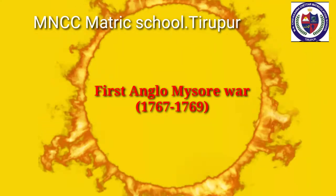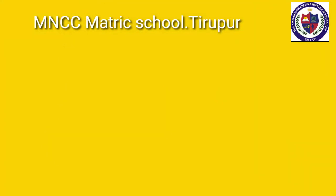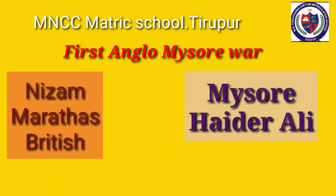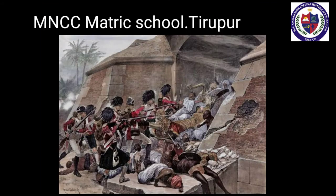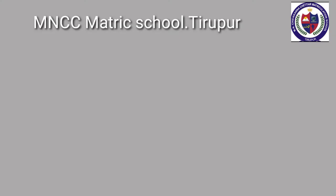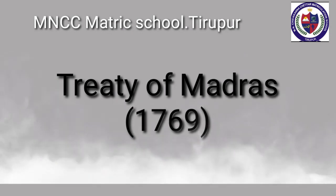Hence, the 1st Anglo-Mysore War started in 1767 and ended in 1769. The Nizam, the Marathas, and the British formed a triple alliance against Haider Ali. The Nizam with the help of British troops under General Joseph Smith invaded Mysore. Haider Ali defeated the English, captured Mangalore. In March 1769, he attacked Madras and forced the English to sign the Treaty of Madras on 4th April 1769. Both parties returned the conquered territories and promised to help each other in case of trouble.